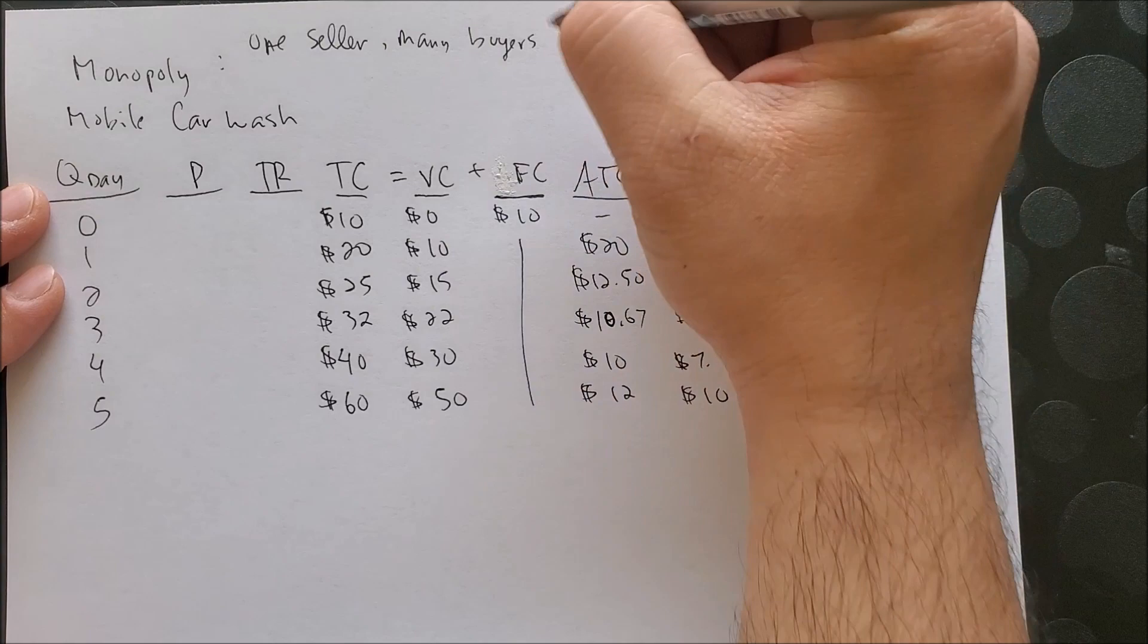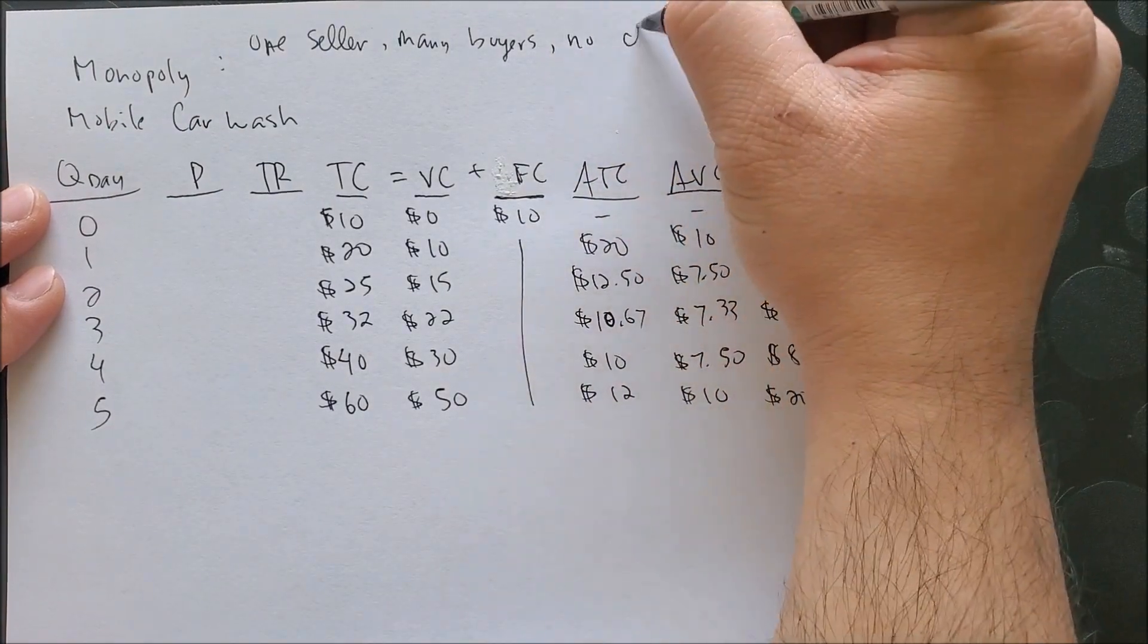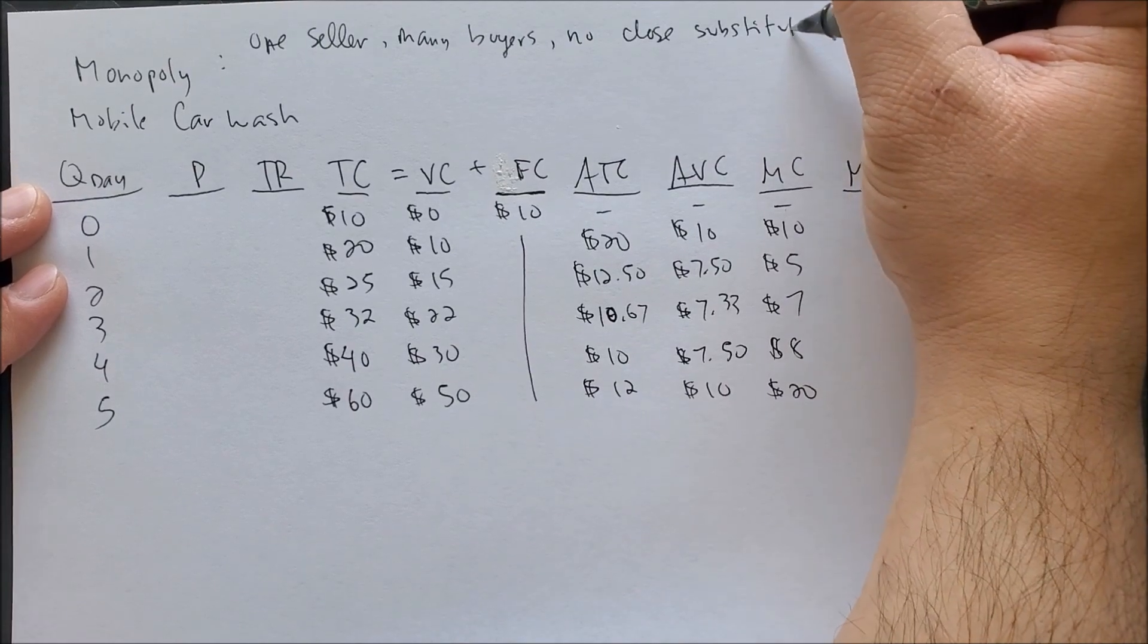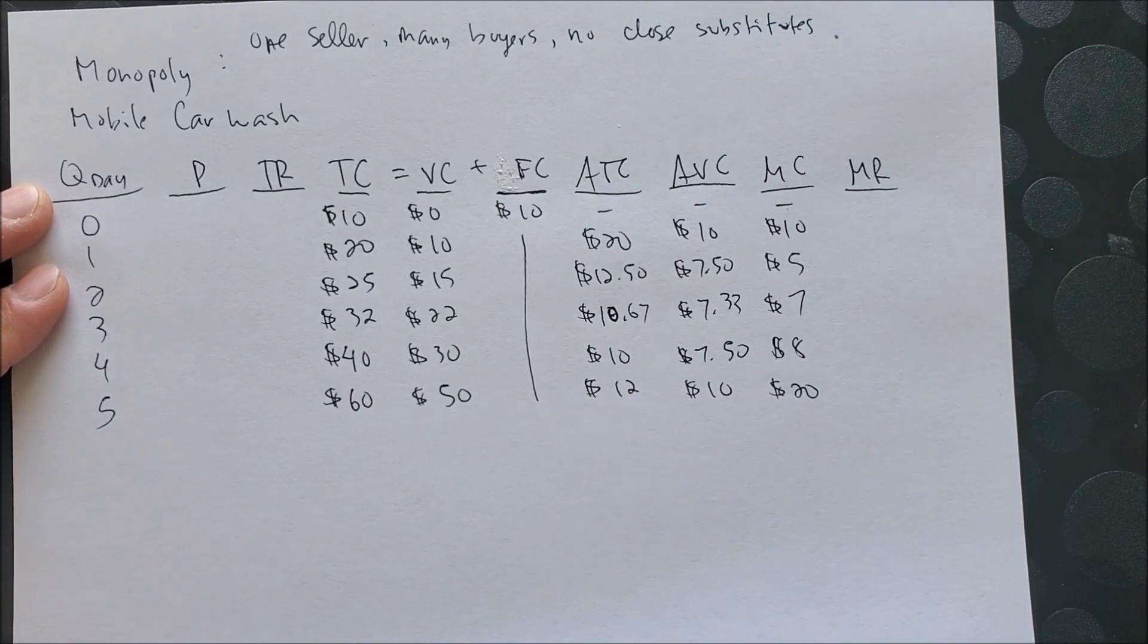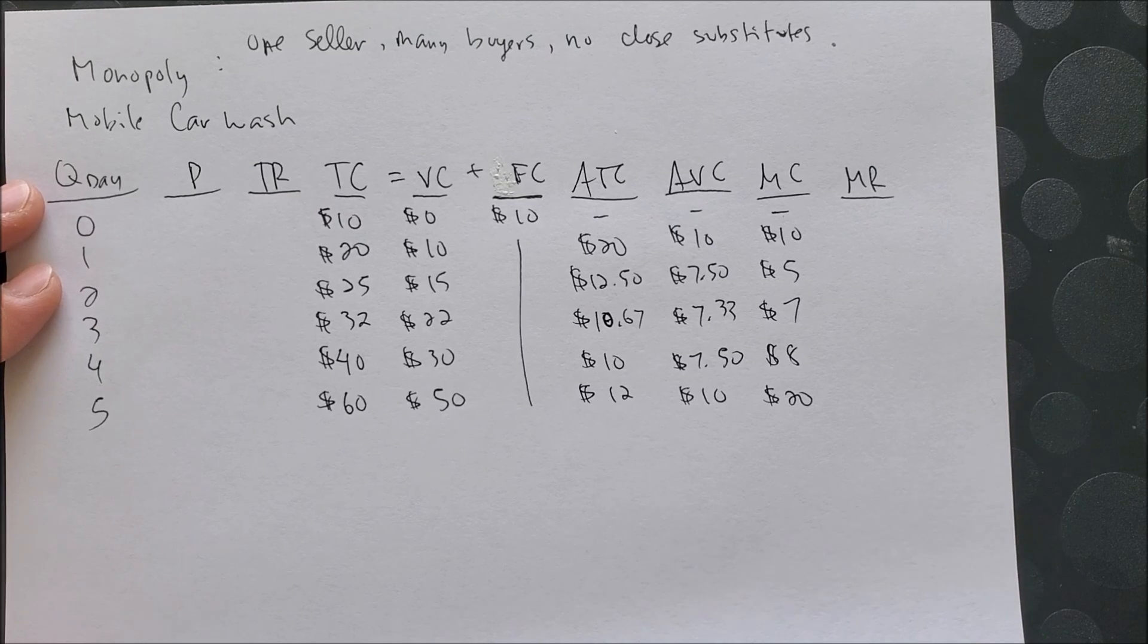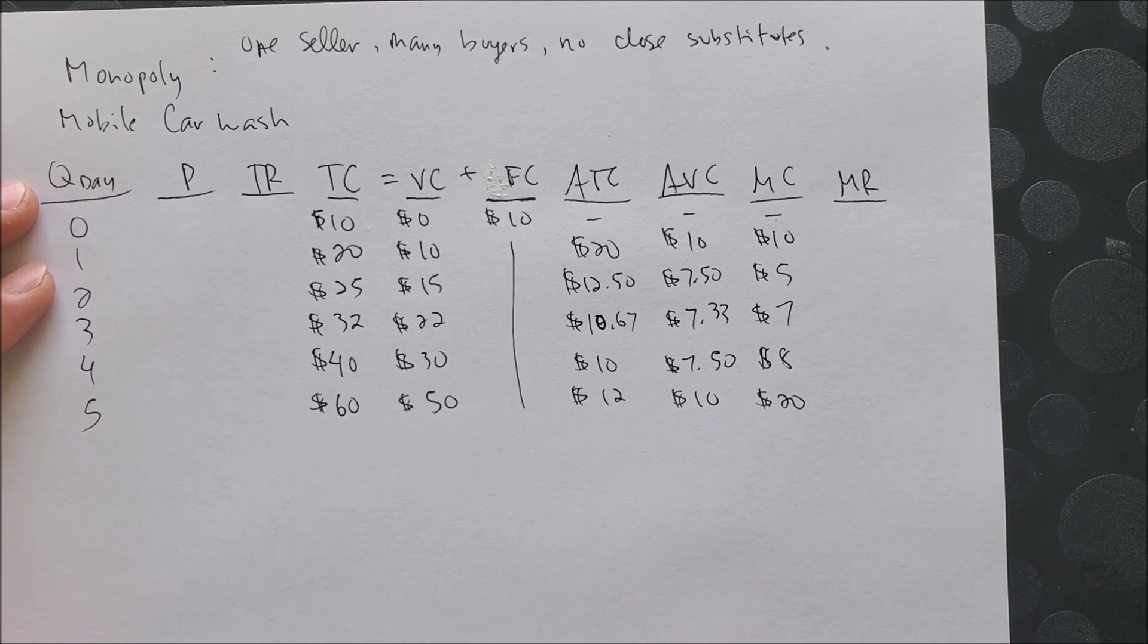At the same time, there are no close substitutes. So whatever the firm is producing, it is really unique. It's really a unique good that no other firms are able to produce.